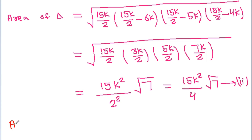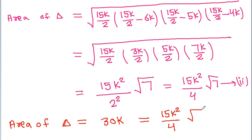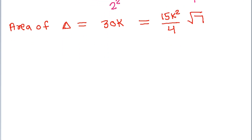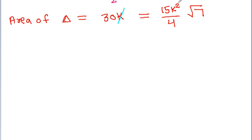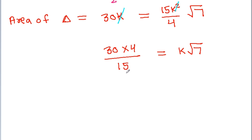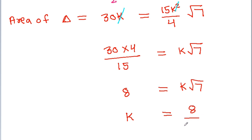From equation 1 we have area equal to 30k, and from equation 2 we have area equal to 15k squared divided by 4 times root 7. Setting them equal, one k cancels from each side and we get 30 times 4 divided by 15 equals k times root 7, which gives 8 equals k root 7. So k is equal to 8 divided by root 7.